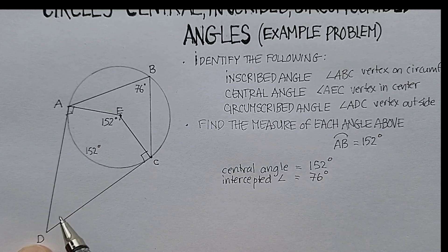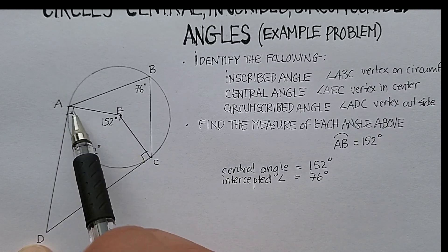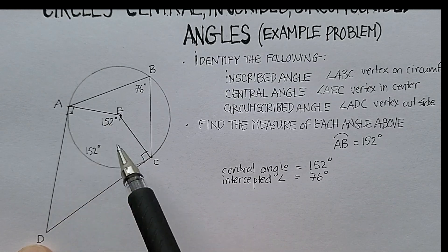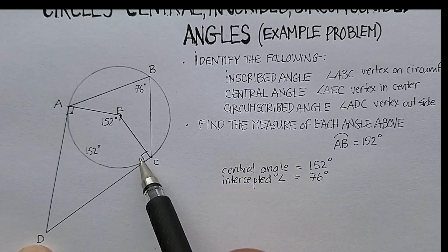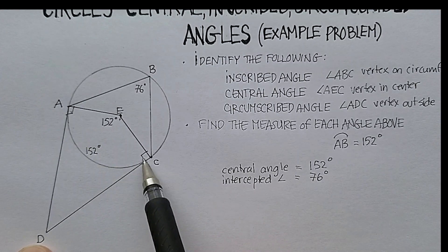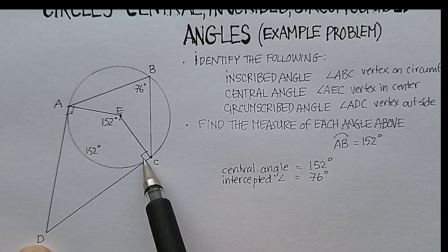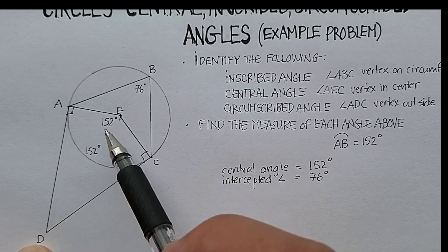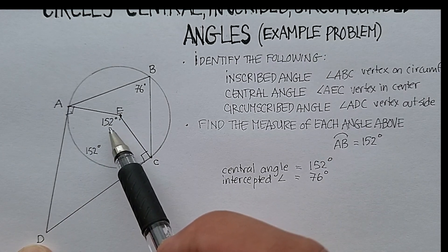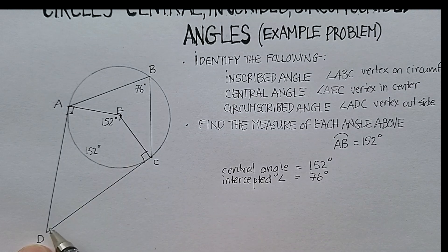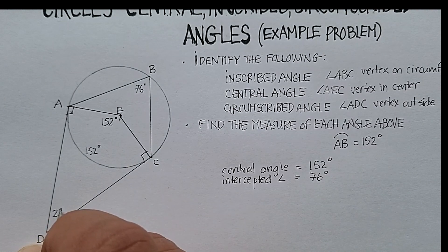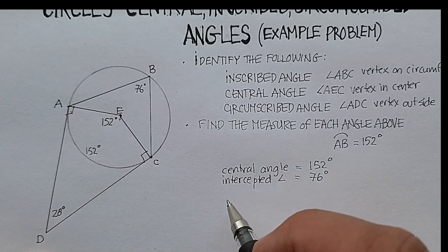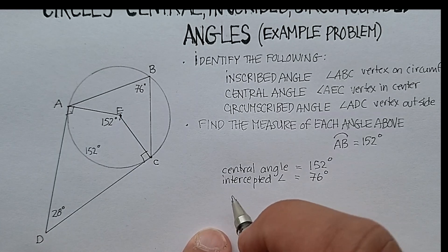Or you could remember that opposite angles in a kite are supplementary. Let me say that again. Opposite angles in a kite are supplementary. So this angle and this angle, which are opposite one another, 90 and 90 is 180, which means supplementary, which means that these two have to be supplementary. So 152 plus 28 would give me 180 degrees, which means my circumscribed angle ADC is equal to 28 degrees.